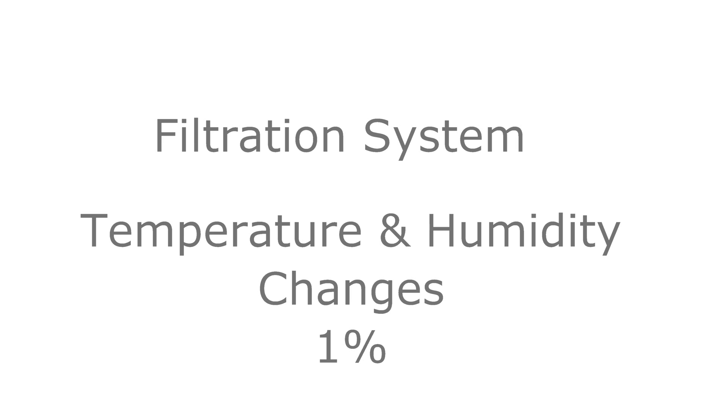So what other things should you include? You should have a filtration system that minimizes particle levels in the air, and you should keep temperature and humidity changes to around 1%. The system should be alarmed for power loss, high and low temperature, as well as high and low humidity, smoke detection, compressor failures, and water flooding.